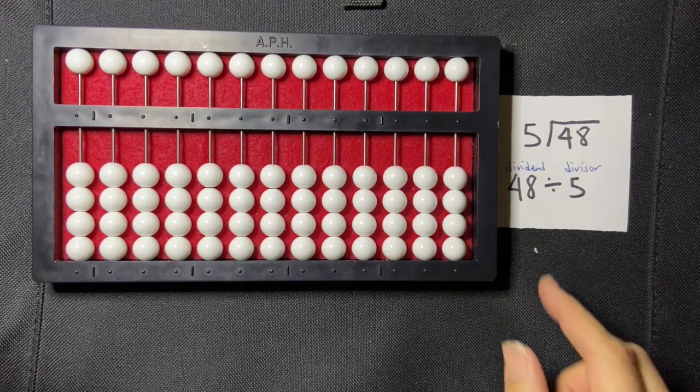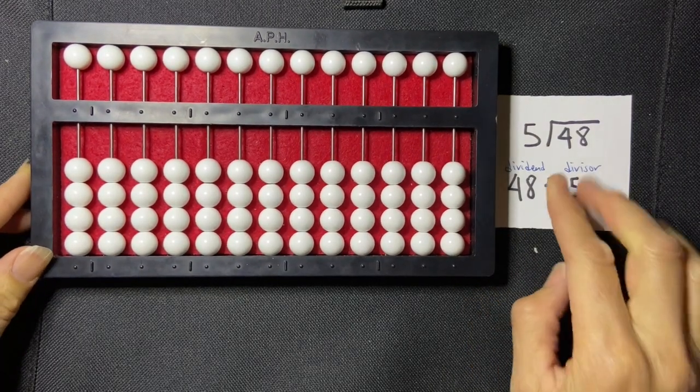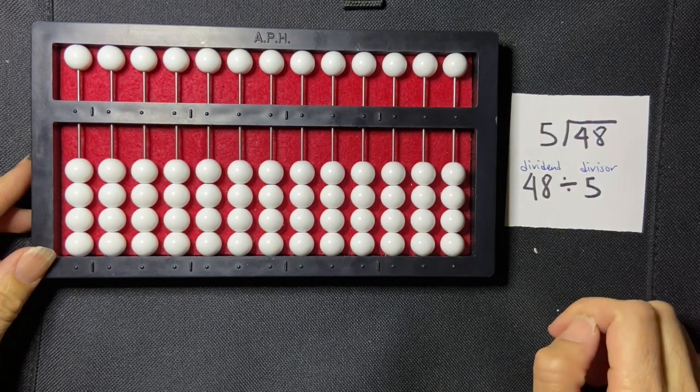Okay, I'm going to use a TSBVI method, an indirect method, to do the division problem 48 divided by 5.